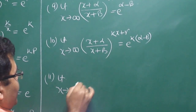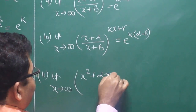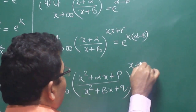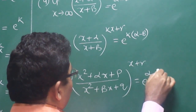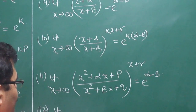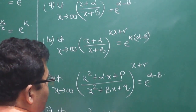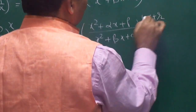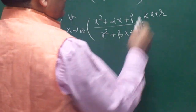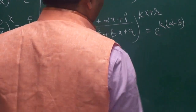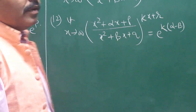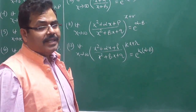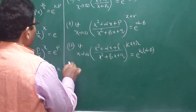For a pattern like limit x tends to infinity, x squared plus alpha x plus p upon x squared plus beta x plus q, to the power of any linear function x plus gamma — the answer is e to the power alpha minus beta. And if the power is kx plus r, then the answer becomes e to the power k times alpha minus beta. All these patterns you should keep in mind and memorize, so that whenever you see this pattern you can directly write the answer.